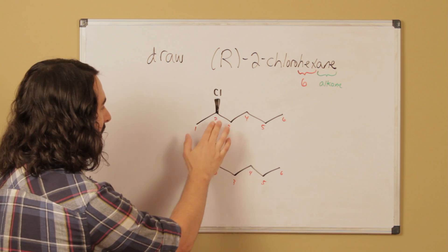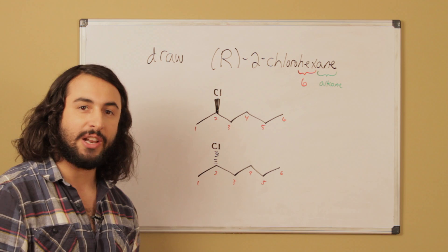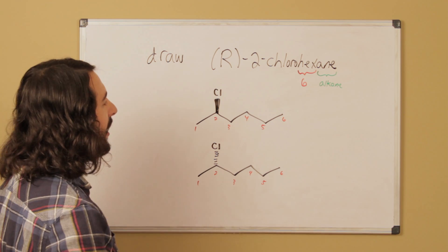Let's first understand that these are the two possibilities, because we can either have the chlorine on carbon two, but it can be either a wedge bond or a dash bond. Now we have to choose the one that exhibits R stereochemistry.